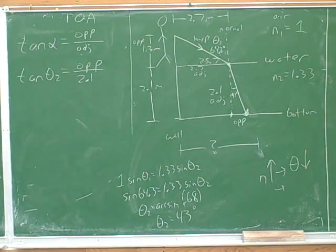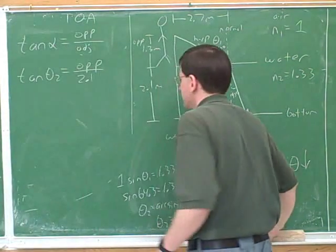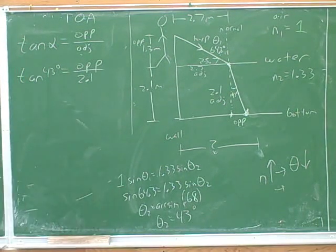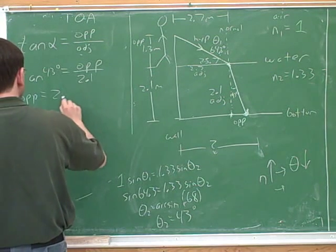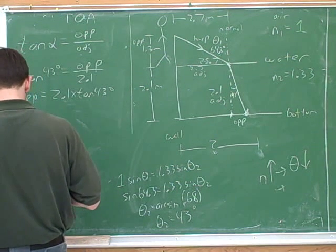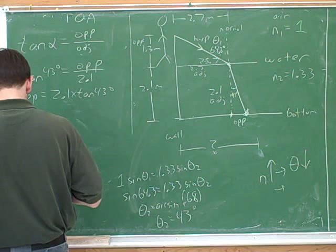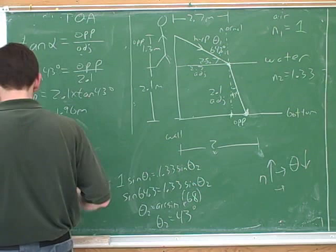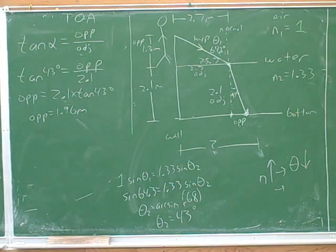Is that 43? Yeah, 43 degrees. We might as well say what theta 2 is. Theta 2 is 43 degrees. We have 1.96 meters. That sounds good. Now let's try to label that carefully in our picture. What distance is that 1.96 meters? That's right.